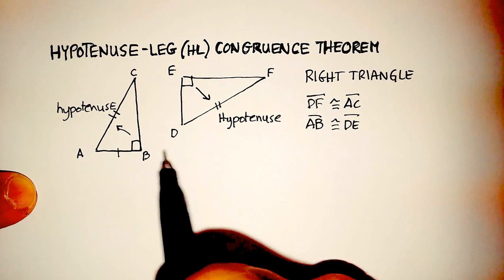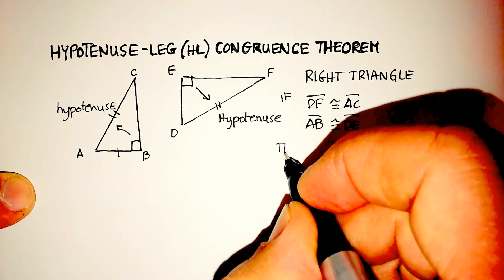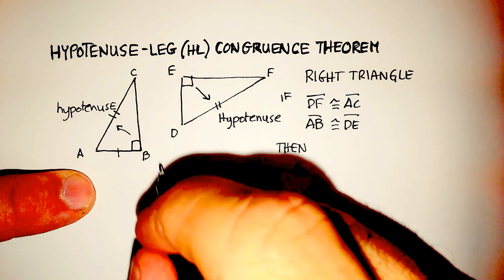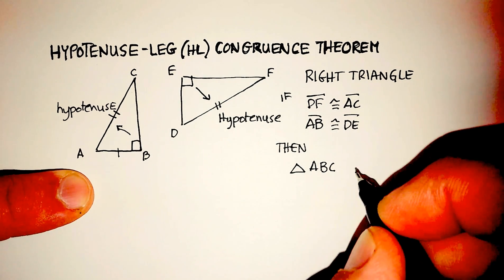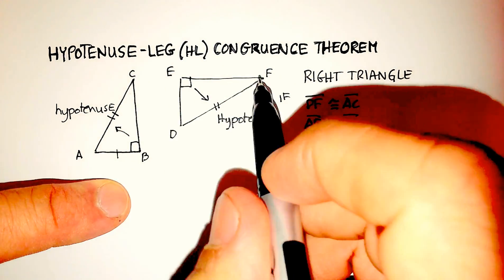And again, it's a right triangle, then, so this would be my if statement, then triangle ABC would be congruent with triangle DEF.